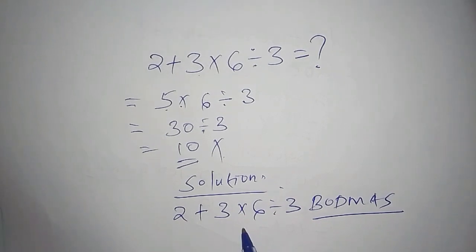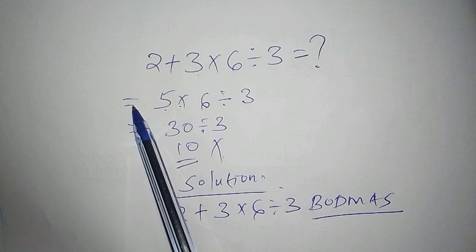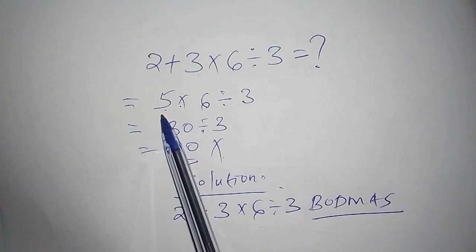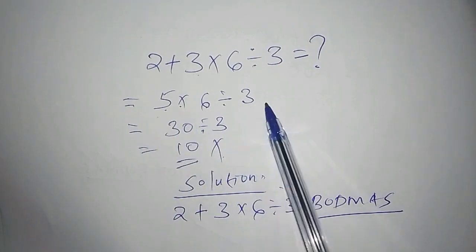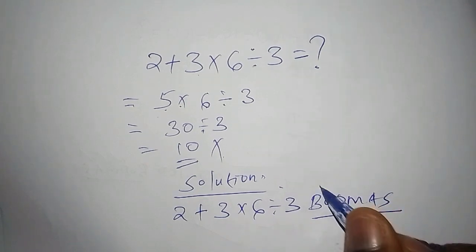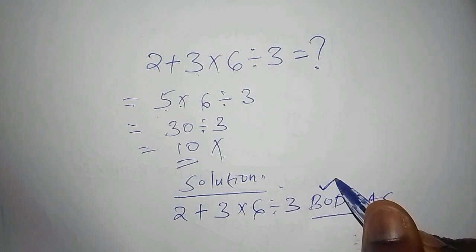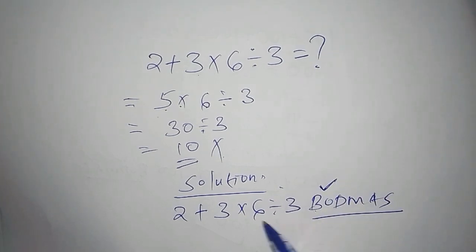First, once we bring the BODMAS, we are able to find the correct order of operation to calculate this math problem. We should avoid this mistake of just starting to work out randomly without following the correct order. So we start with B, BODMAS. B stands for bracket, so there is no bracket in this operation, so we skip it.